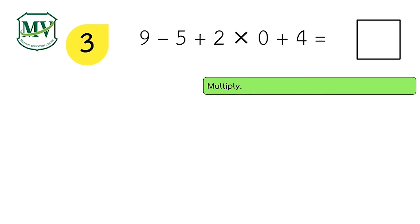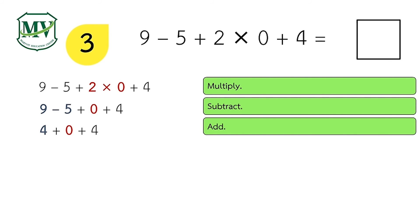First, 2 times 0 equals 0. Next, 9 minus 5 equals 4. Then 4 plus 0 plus 4 equals 8. The final answer is 8.